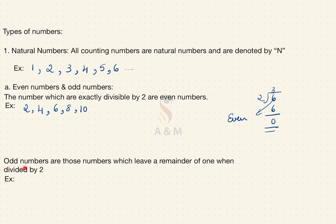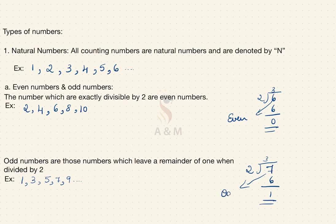Next is the odd number. Odd numbers are those numbers which leave a remainder of 1 when divided by 2. Examples of odd numbers are 1, 3, 5, 7, 9 and so on. Let me take 7 as an example and divide it by 2. 2 threes are 6, and you get 1 as a remainder. Therefore 7 will be considered as an odd number.